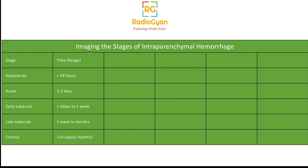When there is hemorrhage, the first thing that happens is that blood starts clotting. This begins at the periphery and gradually moves toward the center. Whatever changes occur in the pathophysiology start at the periphery and move inward. On CT, the imaging appearance is relatively simple — let's understand what actually happens.